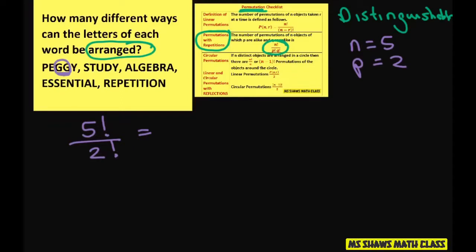And then when you write it out, you can write it out as five times four times three times two factorial divided by two factorial. This gives you twenty times three and twenty times three is sixty. So sixty ways each of these can be arranged to show an order. It has to be distinguishable.